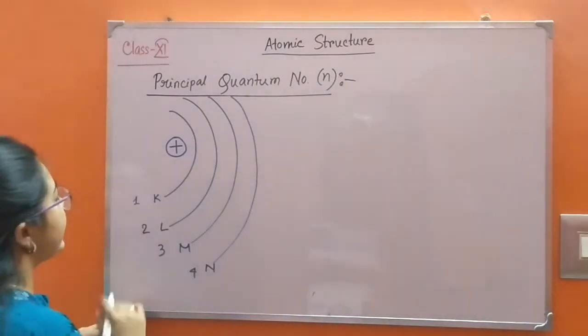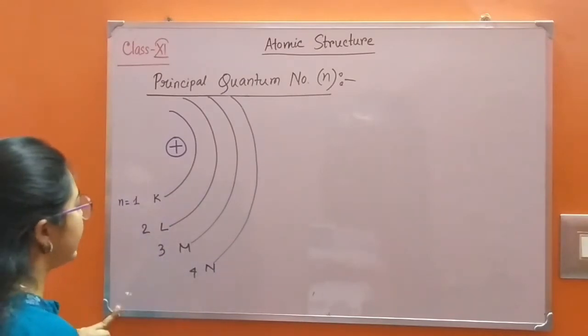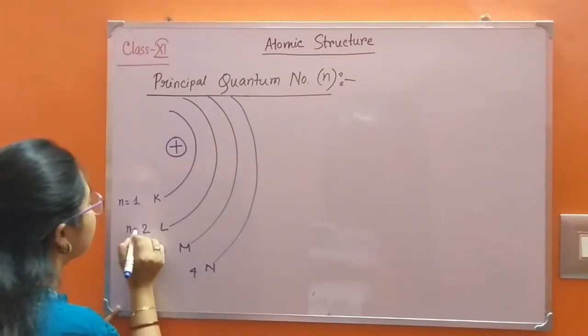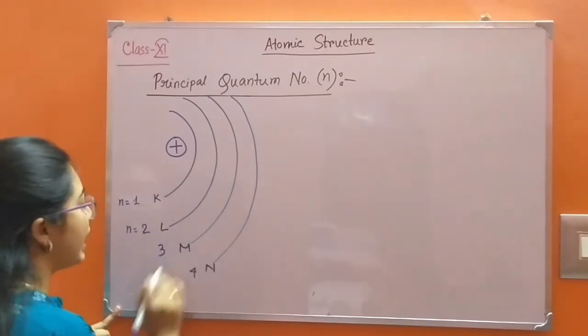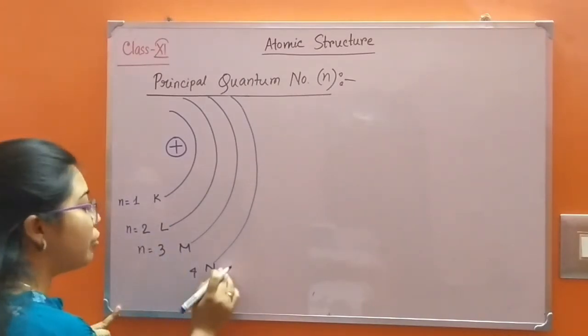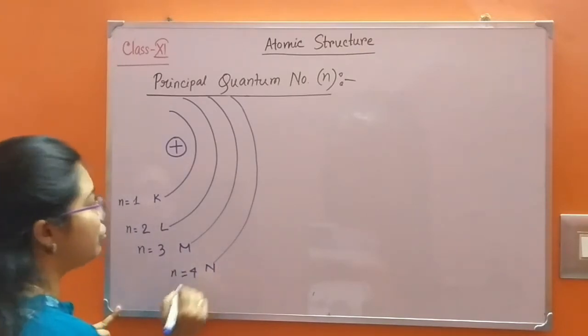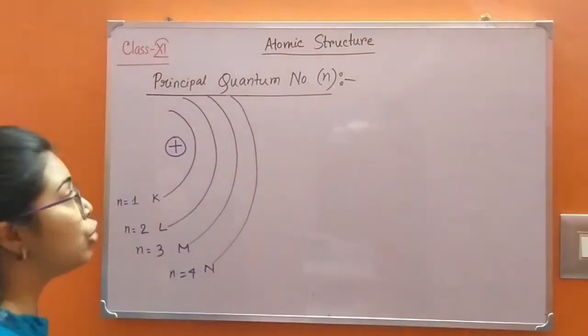For K shell, N equals 1; for L shell, N equals 2; for M shell, N equals 3; for N shell, N equals 4. So, principal quantum number determines the shell in which an electron lies.